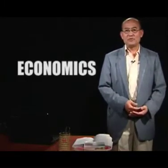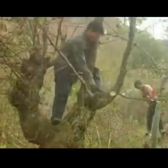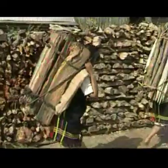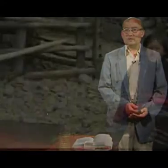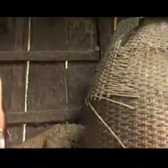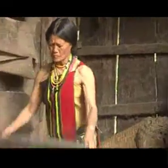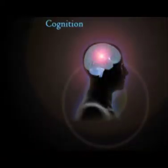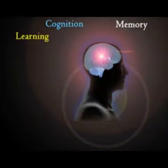Economics is a branch of social science that analyzes the production, distribution and consumption of goods and services. Economic anthropology attempts to explain human economic behavior using the tools of both economics and anthropology. Social psychology is the science of mind and behavior of human nature in society.